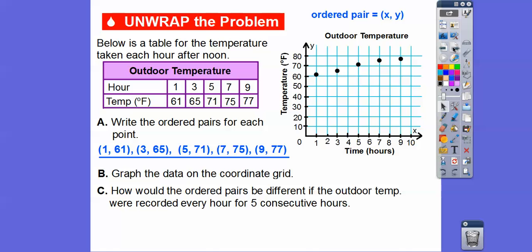How would the ordered pairs be different if the outdoor temperature were recorded every hour for 5 consecutive hours? Well, let's look right here. This is being recorded every 2 hours. 1 plus 2 is 3. 3 plus 2 is 5. 5 plus 2 is 7. If we went up every hour, then this would be 1, and then this would be 2, and 3 would be right here.